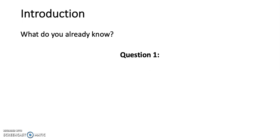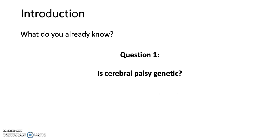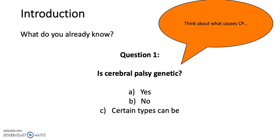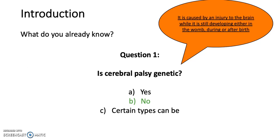So to begin with, we're going to be looking at what you already know. Question one: Is cerebral palsy genetic? A. Yes. B. No. C. Certain types can be. Think about what causes cerebral palsy. The answer is B. No.